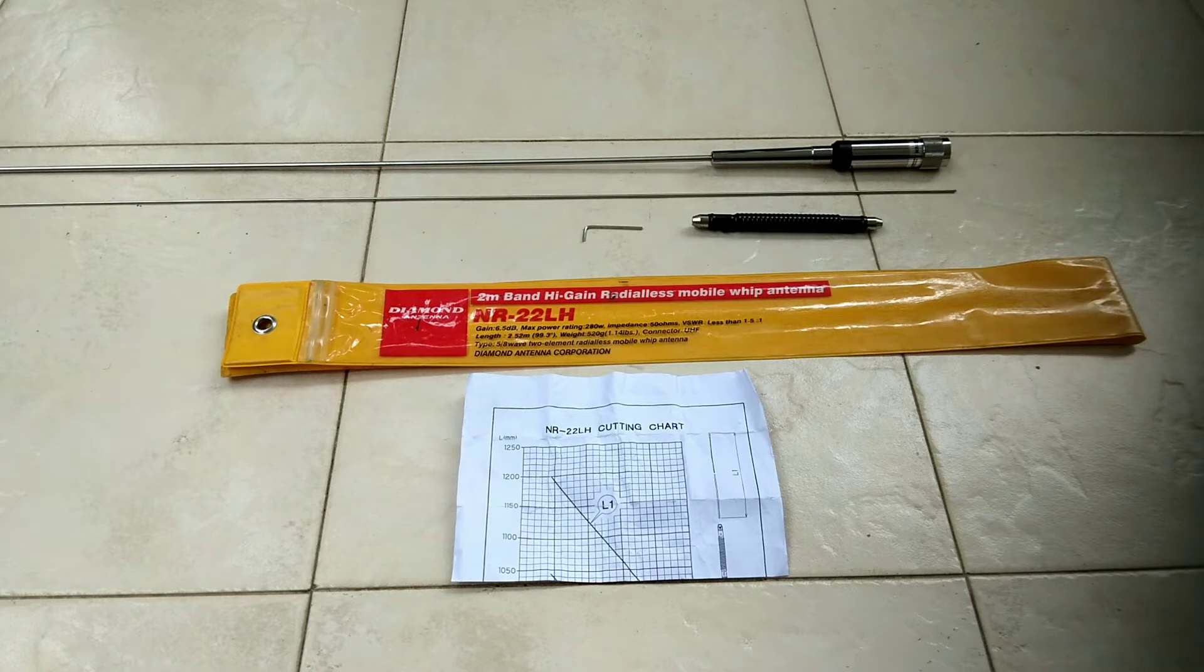On my antenna we have a UHF mount PL259 connector. Usually this antenna is 2x5/8 lambda mobile dipoles together using a phasing coil. That's how this antenna gets the gain of 6.5 dB.